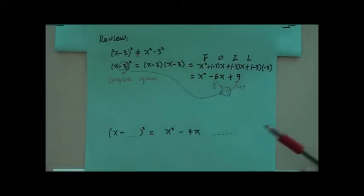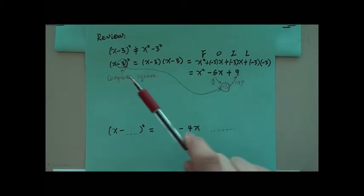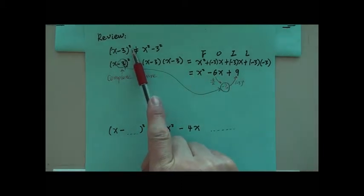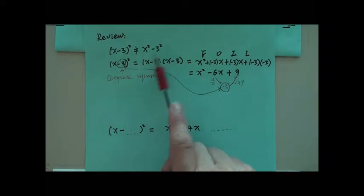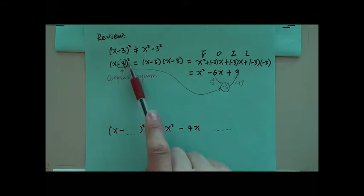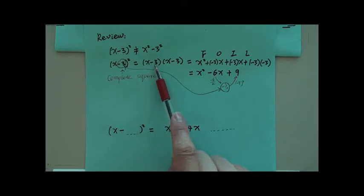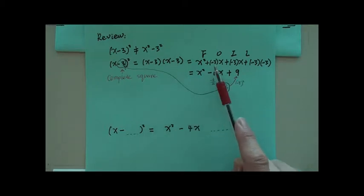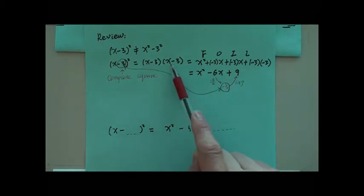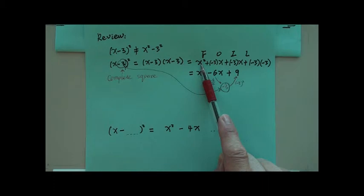Look at this question. x minus 3 squared, please remember, is not x squared minus 3 squared. x minus 3 with parenthesis squared is x minus 3 times x minus 3. And if you FOIL it, there's x times x, x squared.